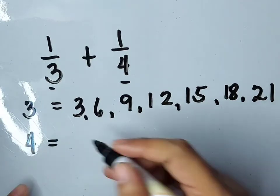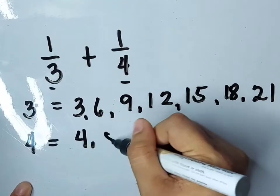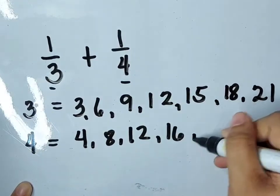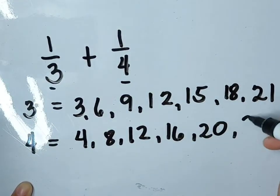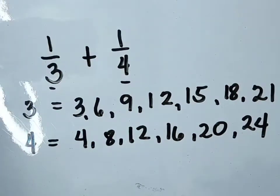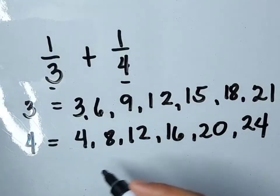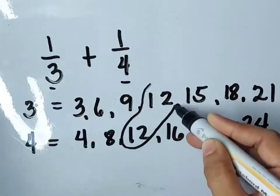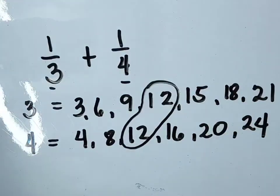How about skip counting by 4? 4, 8, 12, 16, 20, and 24. We need to find the first number that appears in both lists using skip counting. This time, we have 12 — they meet at 12. Therefore, the least common multiple of 3 and 4 is 12.